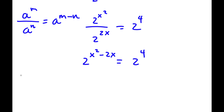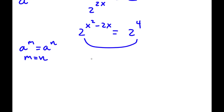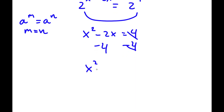Now, if I have something in the form a to the power of m is equal to a to the power of n, then this means that m is equal to n. So in this case, I have 2^(x²-2x) equal to 2^4. Both my bases here are the same, meaning my exponents are the same as well. So x squared minus 2x is equal to 4. To solve this, I'm going to subtract 4 on both sides, and I'll have x squared minus 2x minus 4 is equal to 0.